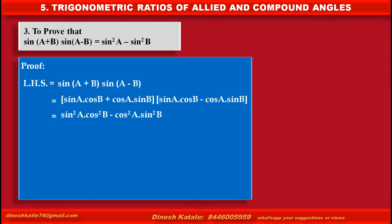Replacing cos²B by 1 minus sin²B and cos²A by 1 minus sin²A, the next step becomes sin²A · (1 − sin²B) minus (1 − sin²A) · sin²B. Multiplying the brackets,